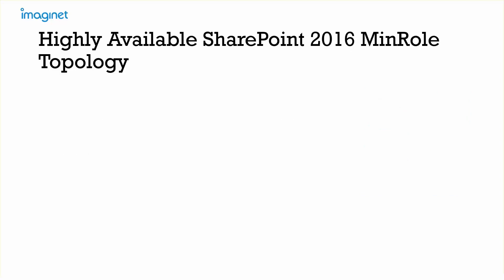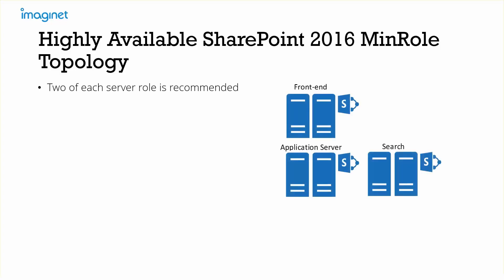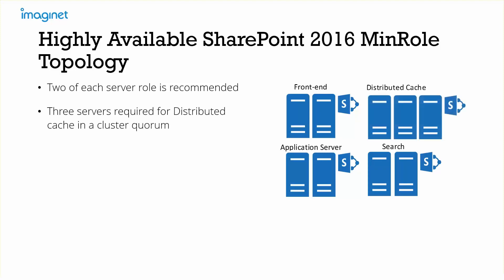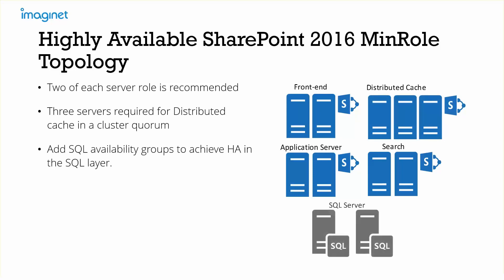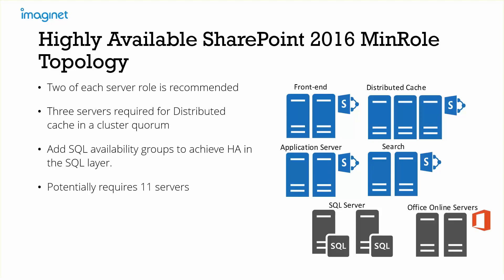Next we'll go over the highly available SharePoint 2016 MinRole topology. In this topology, two of each server is recommended: two web front ends load balanced, two application servers, two search servers, and for distributed cache, three servers in a cluster quorum. Adding SQL availability groups gets you potentially 11 servers total. If you include Office Online servers — two of them — the total bumps to 13. That's a lot of infrastructure, ideal for larger deployments requiring high availability. You'll also need to consider hardware load balancing for the web front ends and Office Online servers.